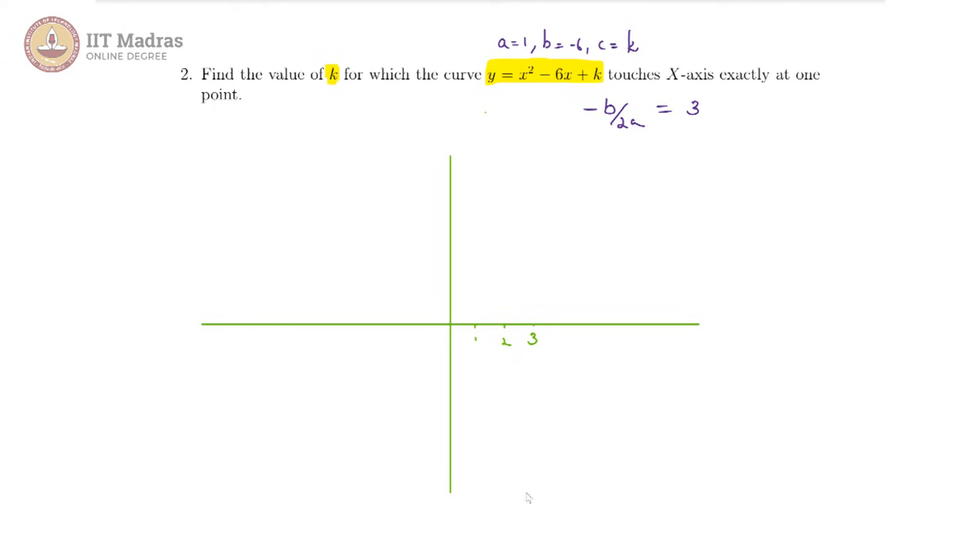Our vertex is on this particular line, that is x equals 3, and we are told that it touches the x-axis. The parabola touches the x-axis at precisely one point. We also can see that a is positive, so this is an upward-turned parabola.